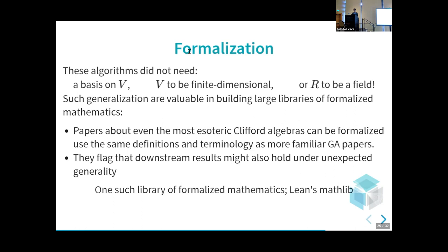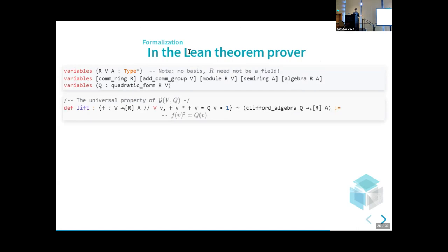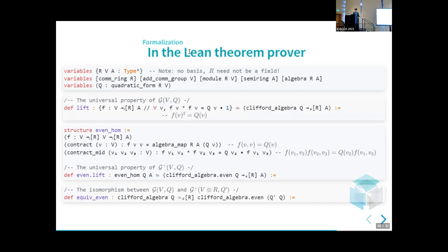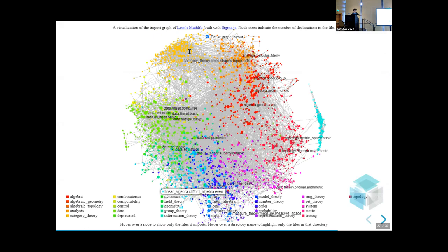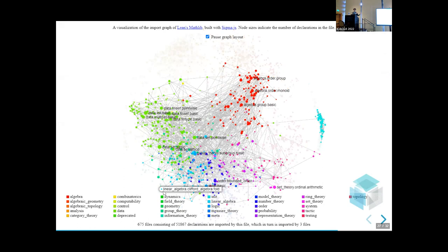One such library of formalized mathematics is Lean's Mathlib. All of the stuff on these slides I've rigorously formalized in this Lean proof language — there'll be a link at the end of the talk and in the paper. For instance, I can write down: when I have a commutative ring R, a module or vector space V, some algebra A, and a quadratic form Q — the universal property is the equivalence between maps with this property and algebra maps on the Clifford algebra. I can do the same for the even subalgebra, and I can write down that the Clifford algebra over Q is isomorphic as an algebra to the even subalgebra of this thing with Q' as its quadratic form. This picture shows how big this math library is — that little label I'm pointing to is the bit I've been talking about today, and then this is everything that it depends on. These are huge libraries and you really need a bit of everything in order to build stuff up from nothing.